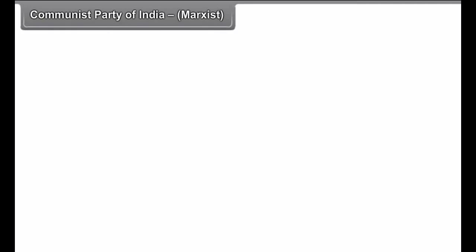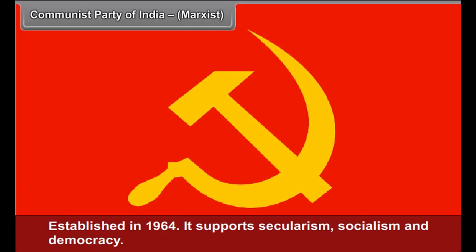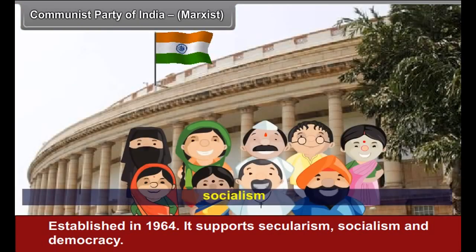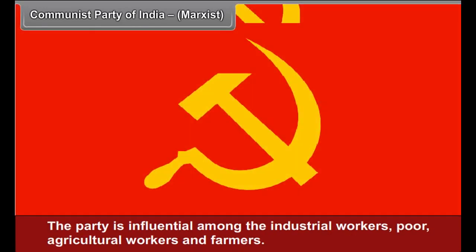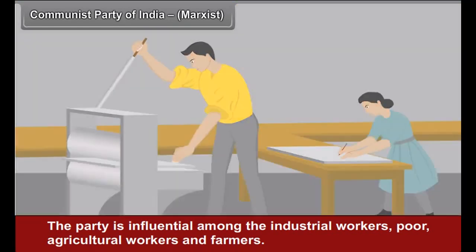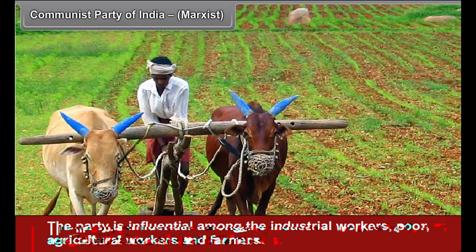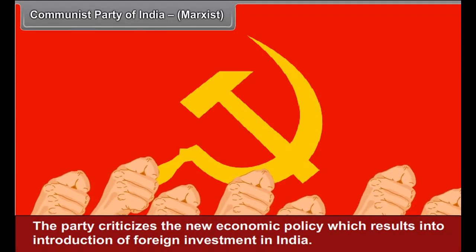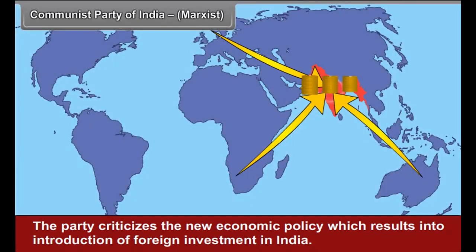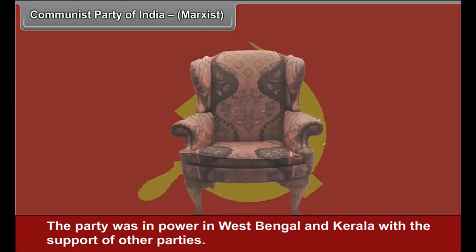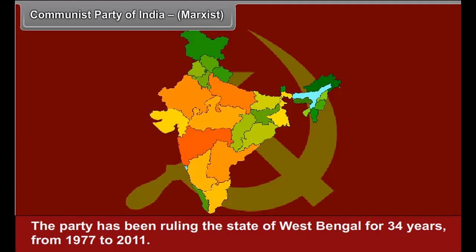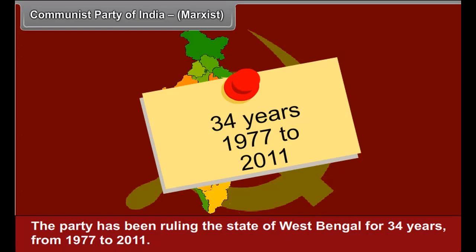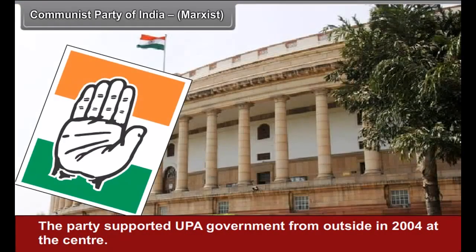Communist Party of India (Marxist): Established in 1964, it supports secularism, socialism, and democracy, and strongly opposes communalism and imperialism. The party is influential among industrial workers, the poor, agricultural workers, and farmers. The party criticizes the new economic policy which results in the introduction of foreign investment in India. The party was in power in West Bengal and Kerala with the support of other parties, ruling West Bengal for 34 years, from 1977 to 2011. The party also supported the UPA government from outside in 2004 at the centre.